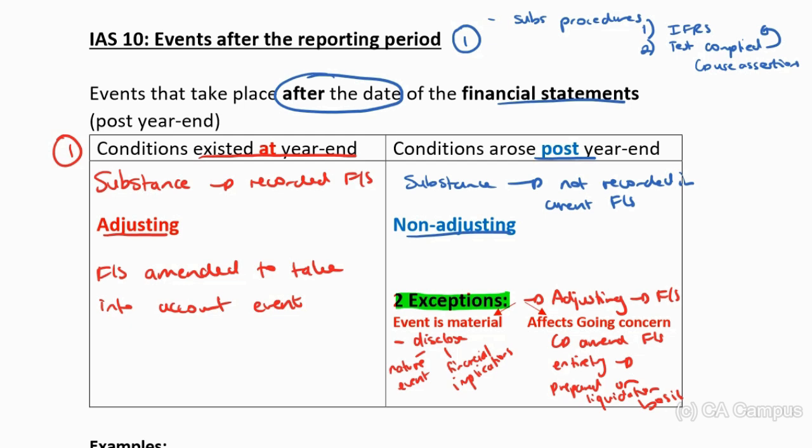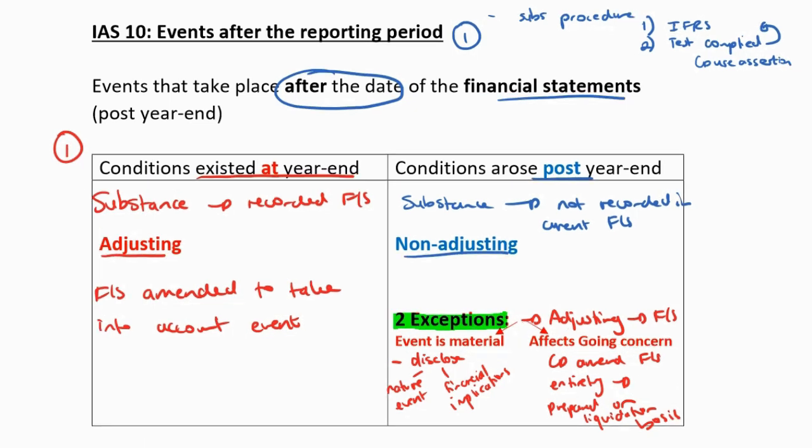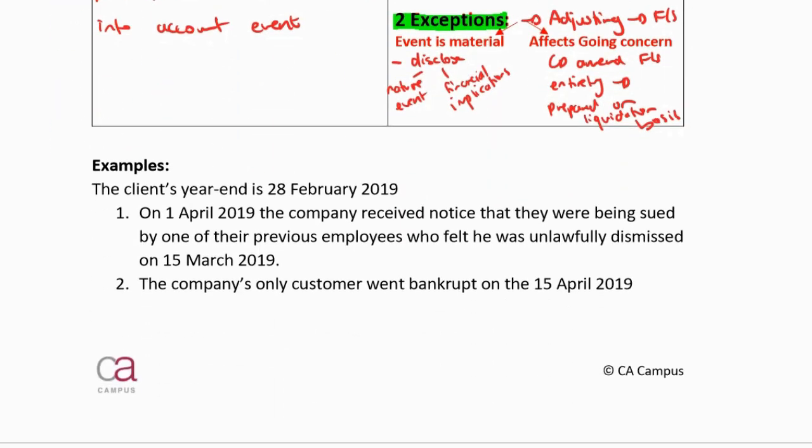So this is the accounting of it: if conditions existed at year end, it is an adjusting event and the entire transaction needs to be recorded. If conditions arose post year end, it is a non-adjusting event — barring two exceptions. If it is a material event, they need to just disclose the event; they don't have to adjust the financials to record the transaction, it's just disclosure. If it is affecting the going concern, they have to amend the financial statements. Let's go have a look at some examples.